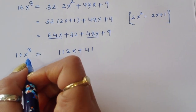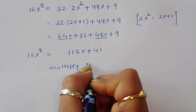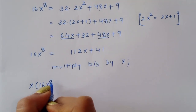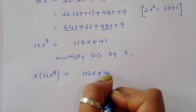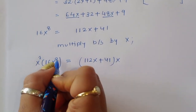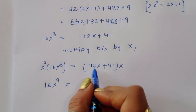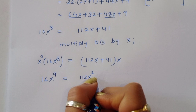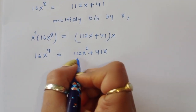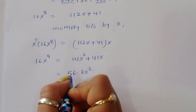Now we need the value of x to the power 9, so we multiply both sides by x. Thus x times 16x power 8 equals (112x plus 41) times x, giving 16x power 9 equals 112x squared plus 41x.